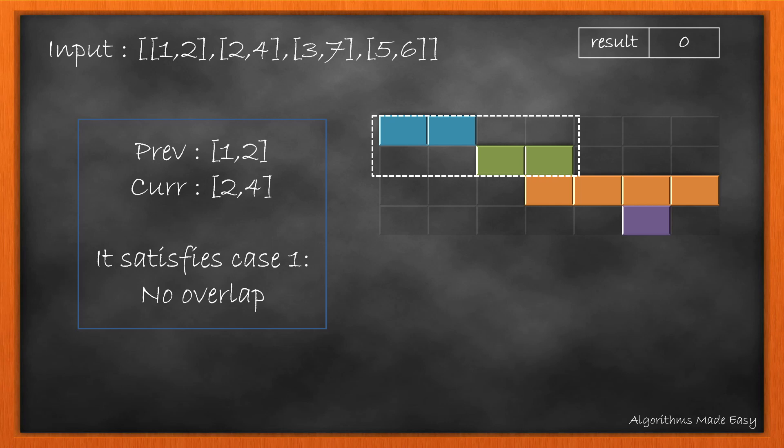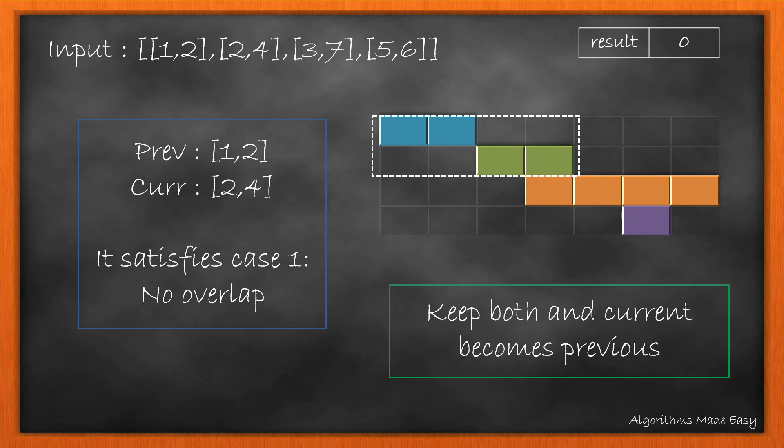These points satisfy case 1, i.e. no overlap. So, we keep both. Also, as we need to compare the points further, we make the current as the previous.